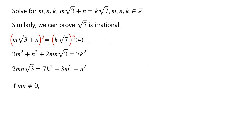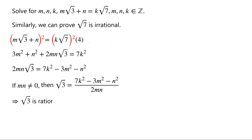If mn ≠ 0, then √3 can be written as (7k² − 3m² − n²) / (2mn). Since m, n, and k are integers, this implies that √3 is rational. This is a contradiction, so mn must equal 0.